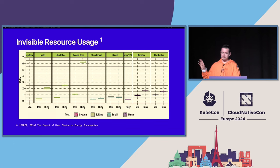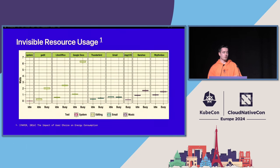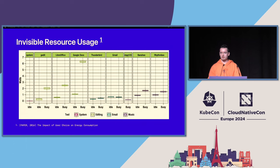I found this in a study — it's a couple of years old so the metrics may have changed, but it illustrates very well that we have an invisibility factor. We don't really have a feeling for the resources we consume. For example, Google Docs consumes a lot more energy than LibreOffice, due to features like cloud syncing, backups, and spell checking. As users or software engineers, we don't really have a sense of that resource consumption.